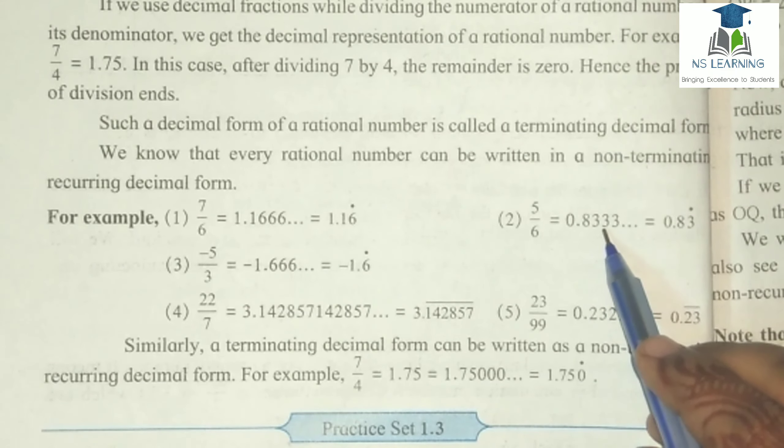37 ke table mein 2 number par 74 aata hai. 2 upar, 74 neeche, minus kiye — bacha 6, 5. Decimal already hai, 0 phir se laga diya. 162 aaya. Yahan par kya ho raha hai — yeh repeat ho raha hai. Yahan par repetition ka cycle start hua yahan se.